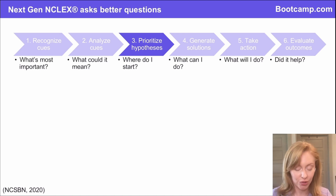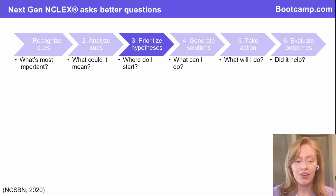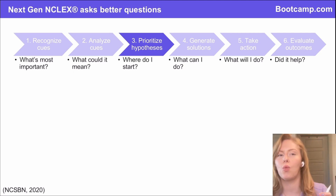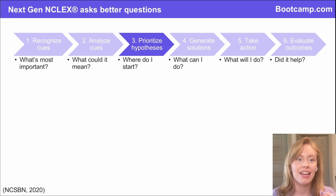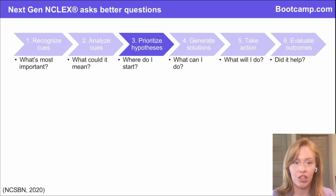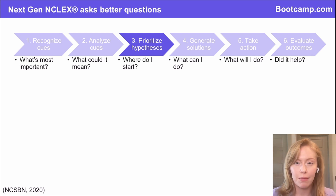So next, now that we've analyzed what those cues mean, we're going to prioritize hypotheses — figure out where do I start. I've got another question for you guys. We're going to prioritize in a hypothetical situation where you are the neuro ICU nurse and you've got a patient who just had a craniotomy and they're coming out of the OR. What are you prioritizing monitoring for?